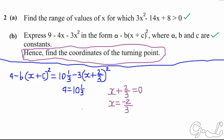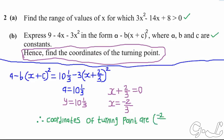For the Y coordinate, you don't have to worry much — the Y coordinate is simply the value of A. So Y is equal to 10 and 1 over 3. Therefore, the coordinates of the turning point are negative 2 over 3 comma 10 and 1 over 3. This is how you find the coordinates of the turning point in an exam.